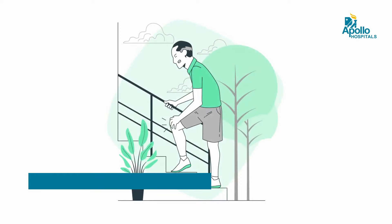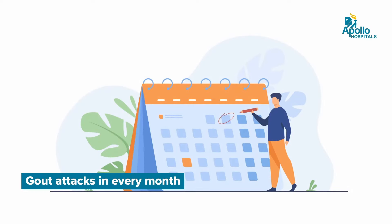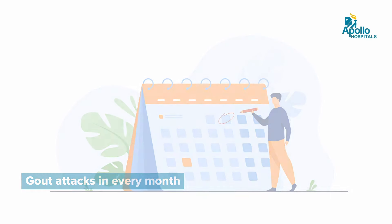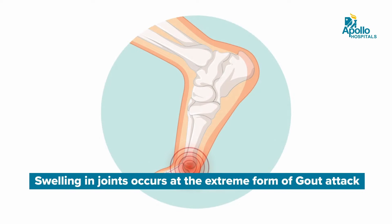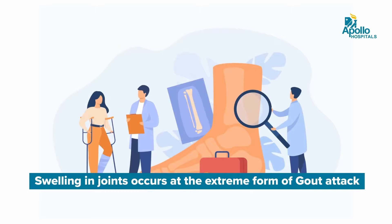How often do gout attacks happen? Gout attacks can happen initially very infrequently — maybe once every two or three months, six months, or a couple of years. But after a while, once the tempo of the disease increases, there are times when the patient may have an attack every month, every 15 to 20 days. In more extreme forms of gout, the patient may have a few swollen joints all the time.